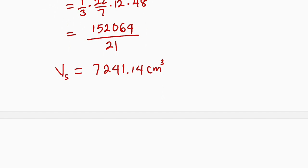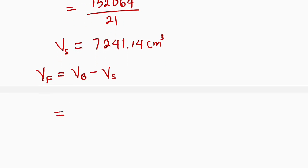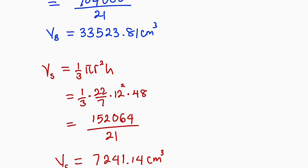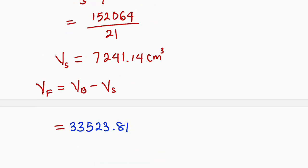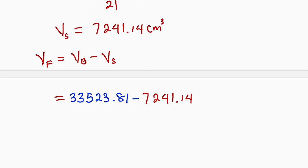To find the volume of the frustum, which is the bucket, we compute: volume of frustum = volume of bigger cone minus volume of smaller cone. So 33,523.81 minus 7,241.14 gives us 26,282.67 cm³. This is the volume of water in the bucket.